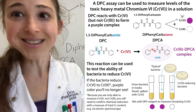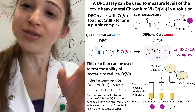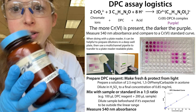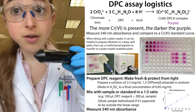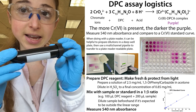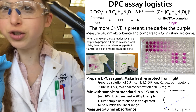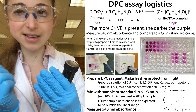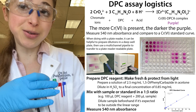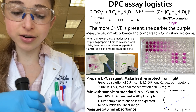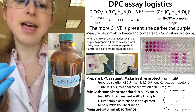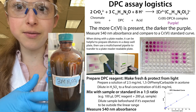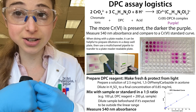You can do cool things like see if bacteria were able to reduce that chromium-6 to chromium-3. The assay is pretty simple. You take the DPC and dissolve it in acetone, using a tube wrapped in foil or a darkened tube because it's light-sensitive. Then you acidify it to make it the active reagent by mixing the DPC solution with sulfuric acid, which provides the acidic environment that promotes the oxidative reaction.